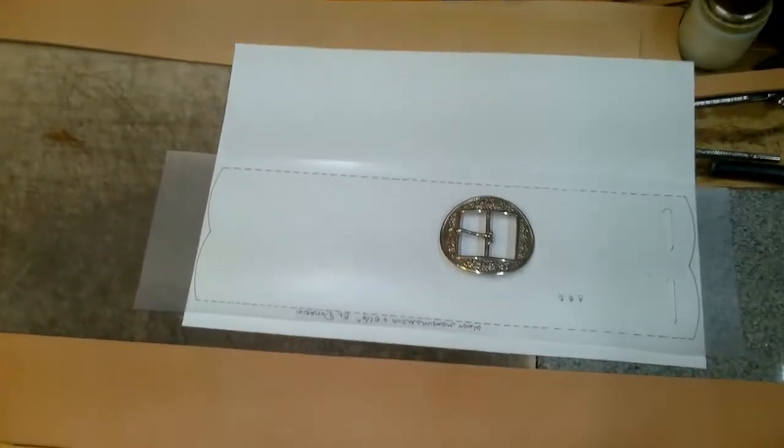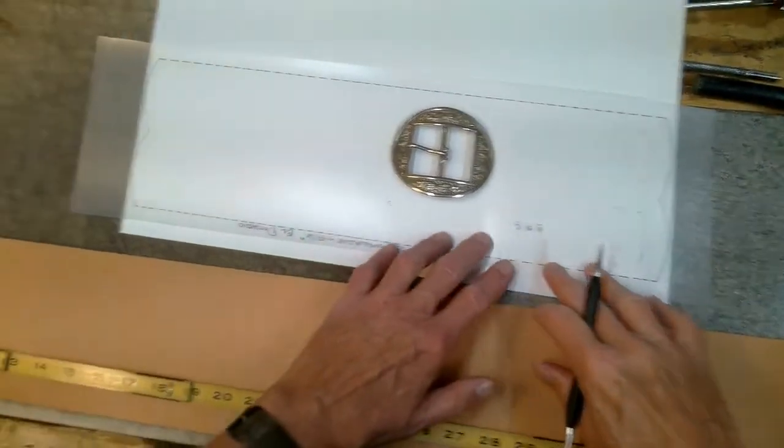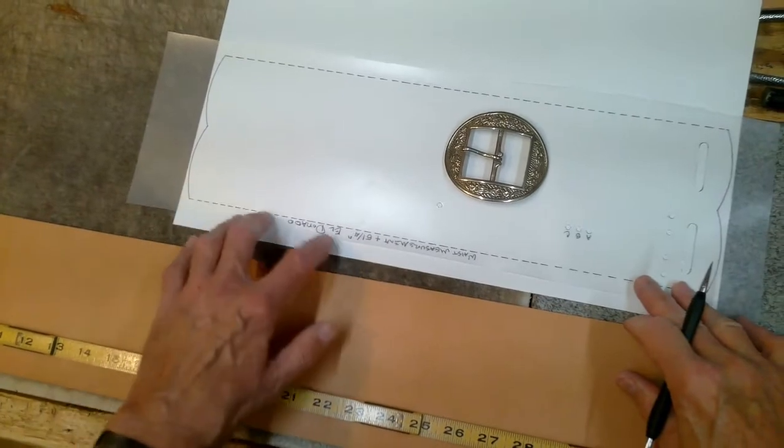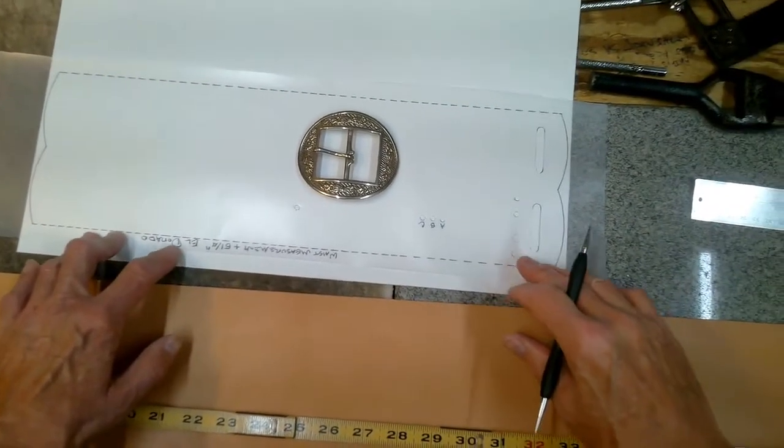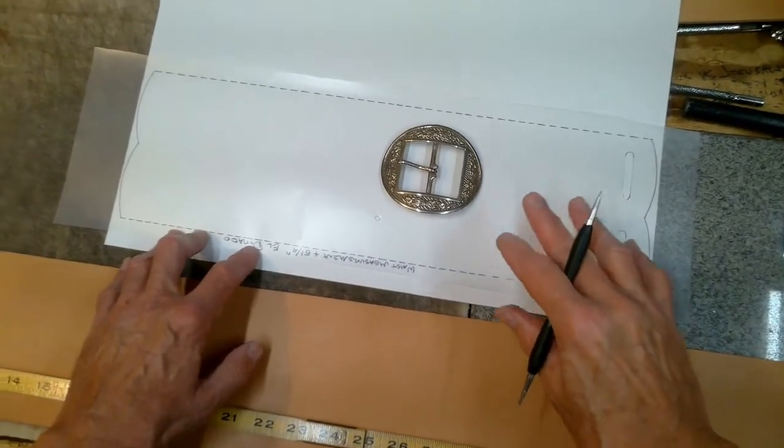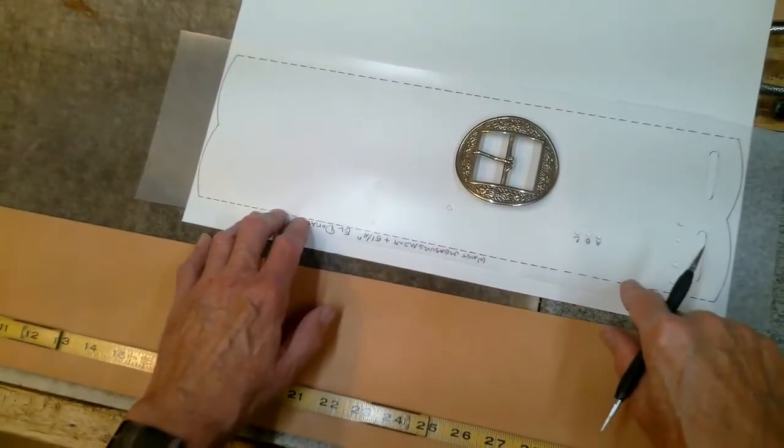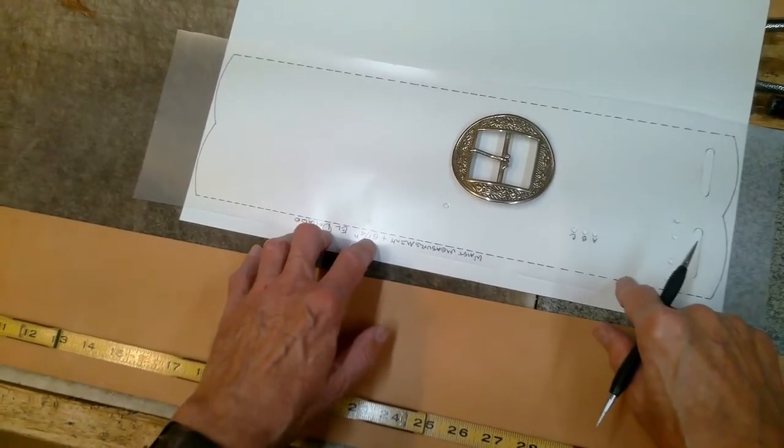Like the Ranger belt patterns, the length of the money belt blank doesn't change with the different size buckles. This oval California buckle is a B size buckle. The chape that holds the buckle will be riveted into the B chape rivet hole transferred from the pattern to the damp belt blank.